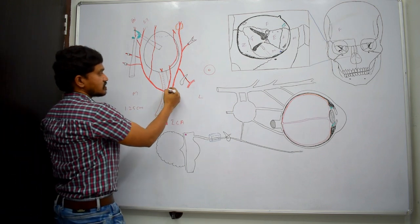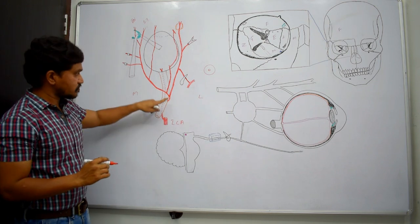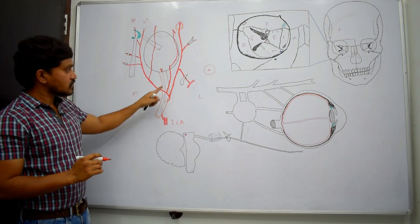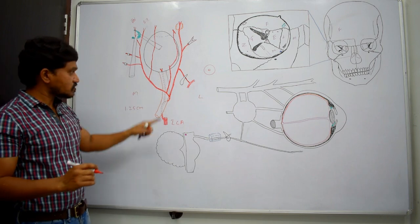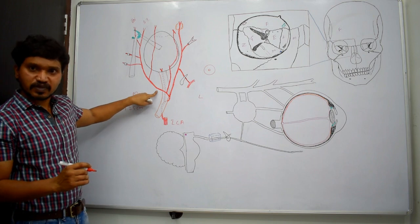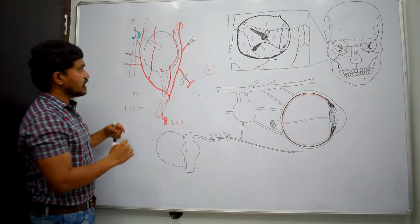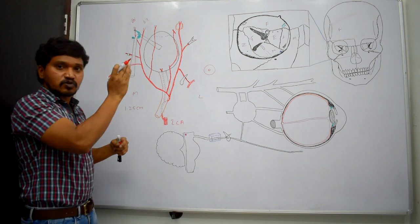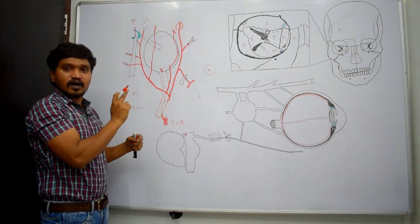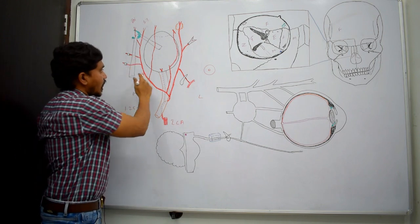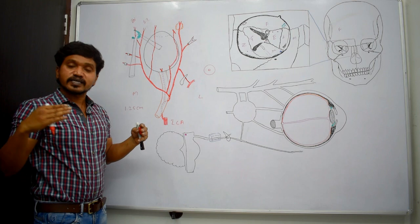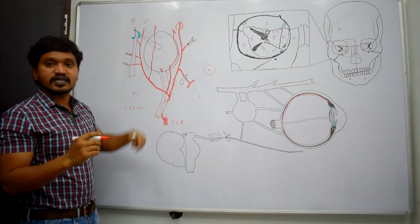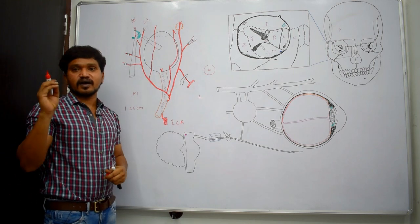The posterior ciliary arteries are branched from the main trunk of the ophthalmic artery. They pass forwards, piercing the sclera around the optic nerve, and enter into the choroid, where they supply the choroid and iris.